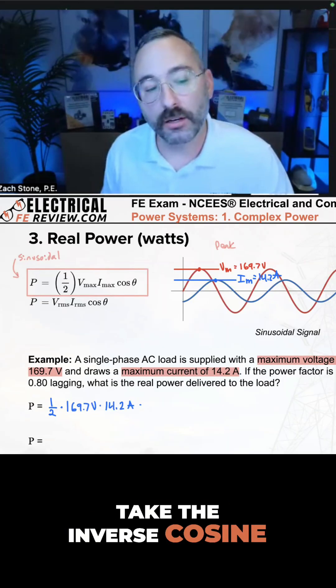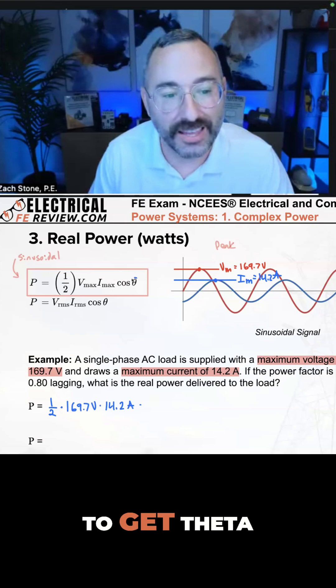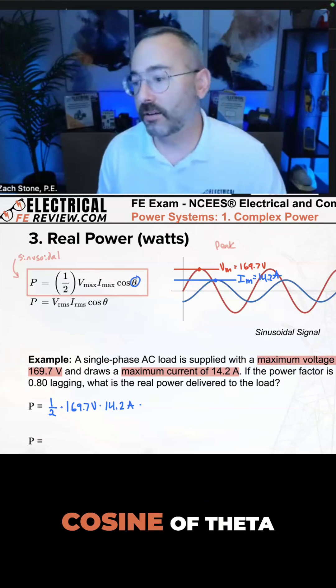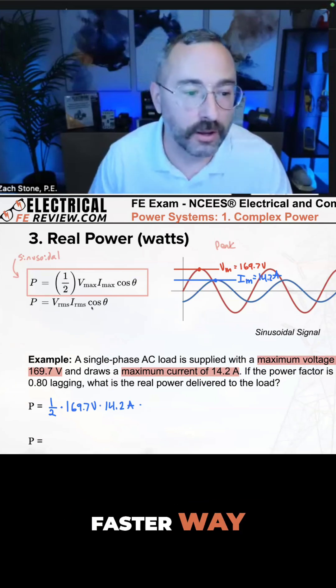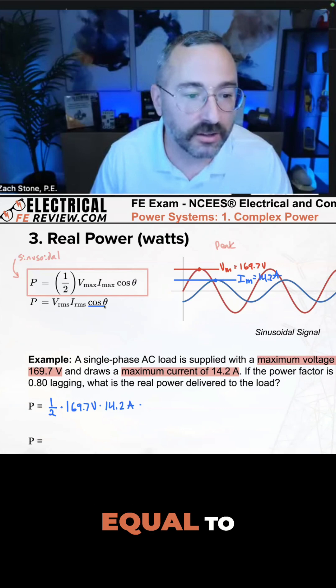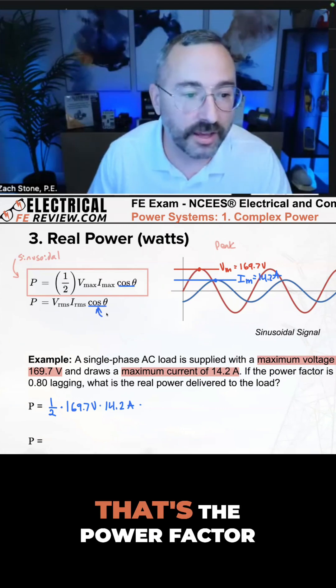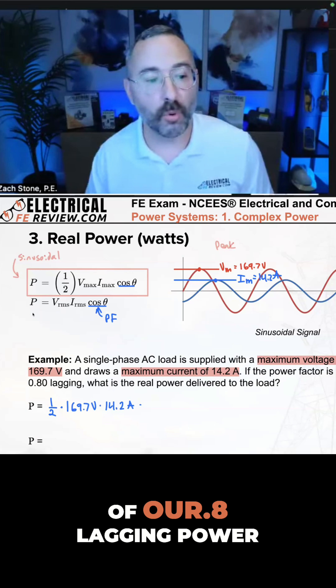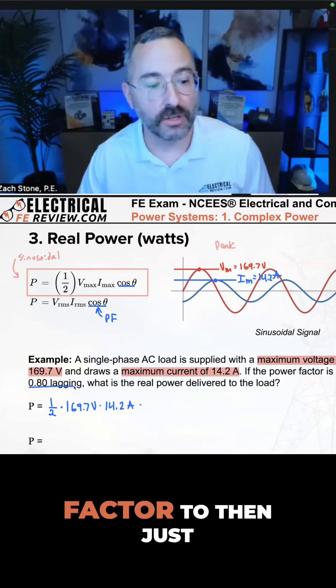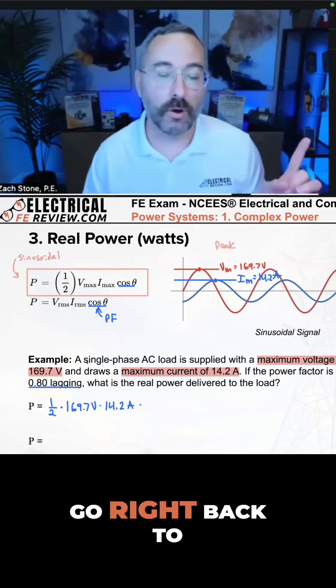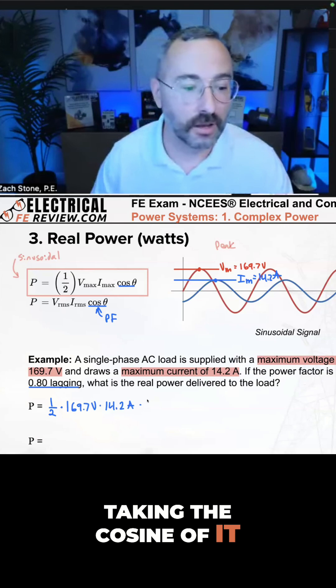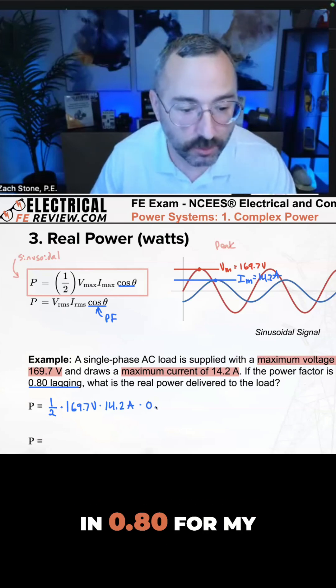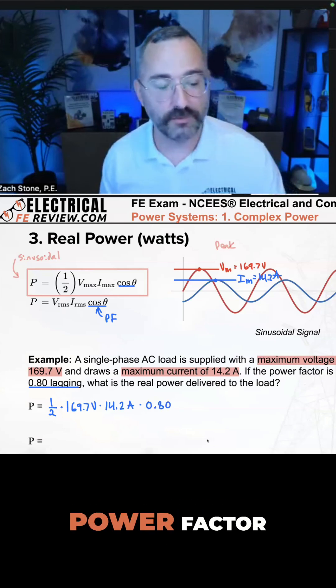Do I need to take the inverse cosine of my power factor to get theta and then take the cosine of theta? Or is there a faster way? What is cosine theta equal to? Well, cosine theta—that's the power factor. So no need to take the inverse cosine of our 0.8 lagging power factor to then just go right back to taking the cosine of it. I'm just going to plug in 0.80 for my power factor. Make sense?